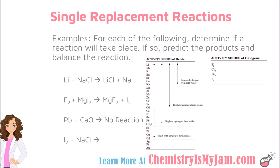In the next reaction, you have iodine as the element by itself. Iodine is a non-metal, so it is trying to replace the non-metal in the compound. Looking at the activity series for non-metals, iodine does not have the ability to replace chlorine because iodine is lower in the series. This is another example where you would write no reaction.